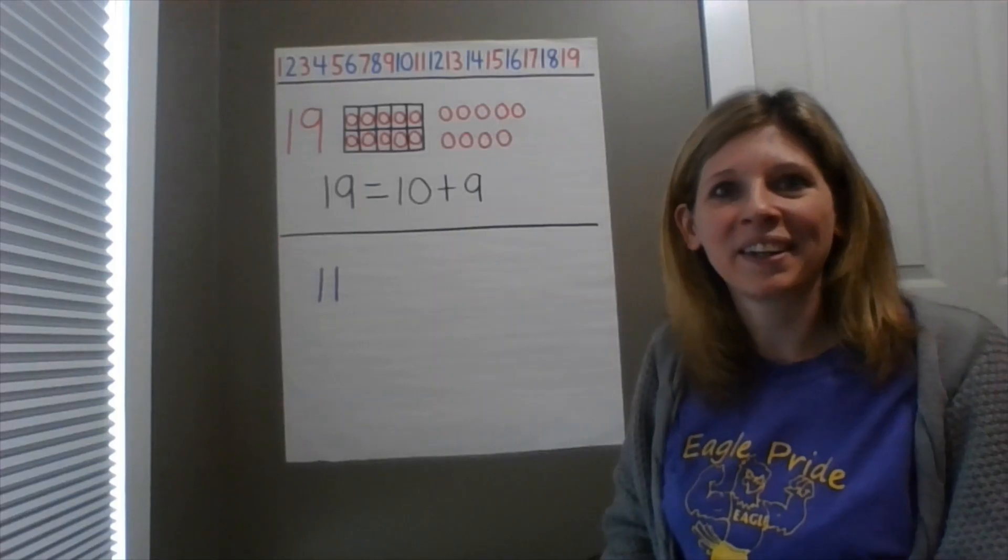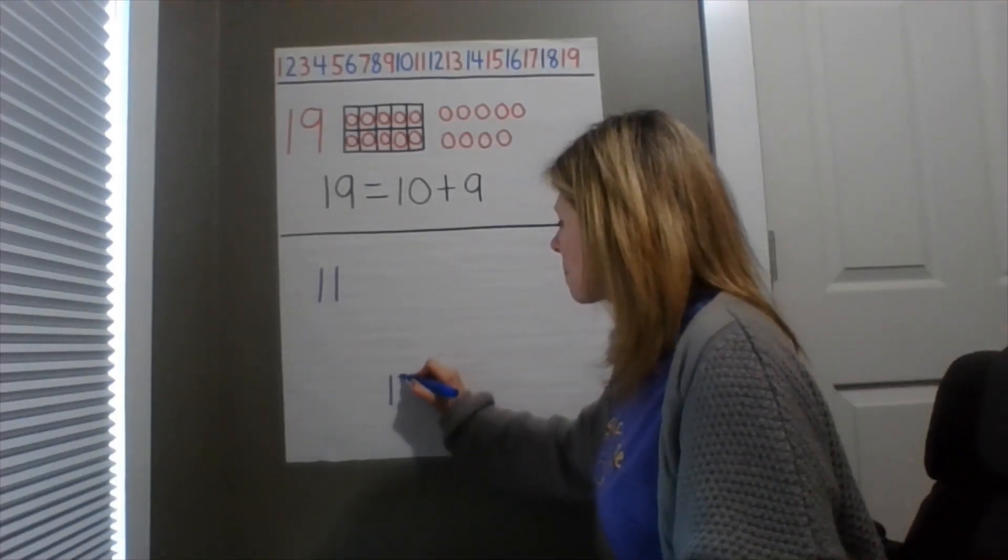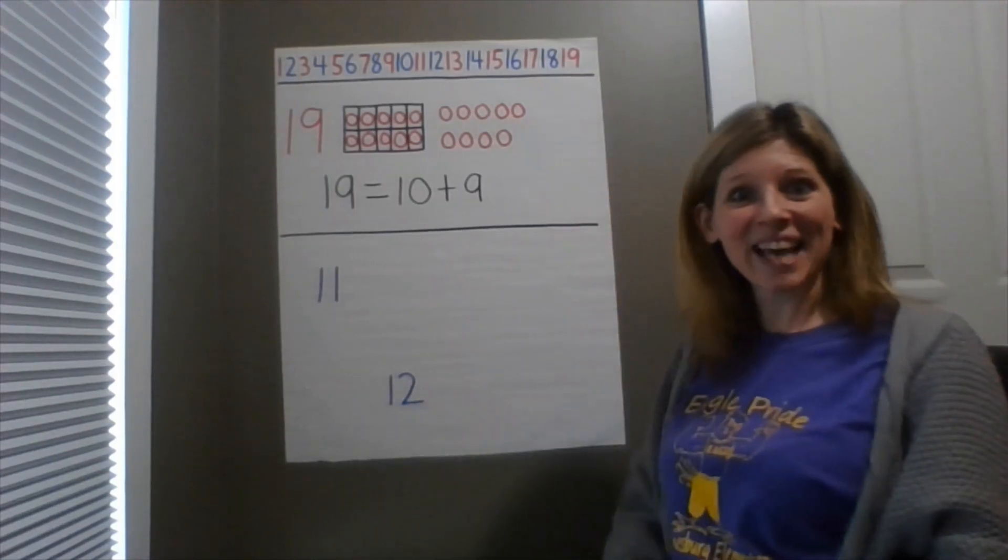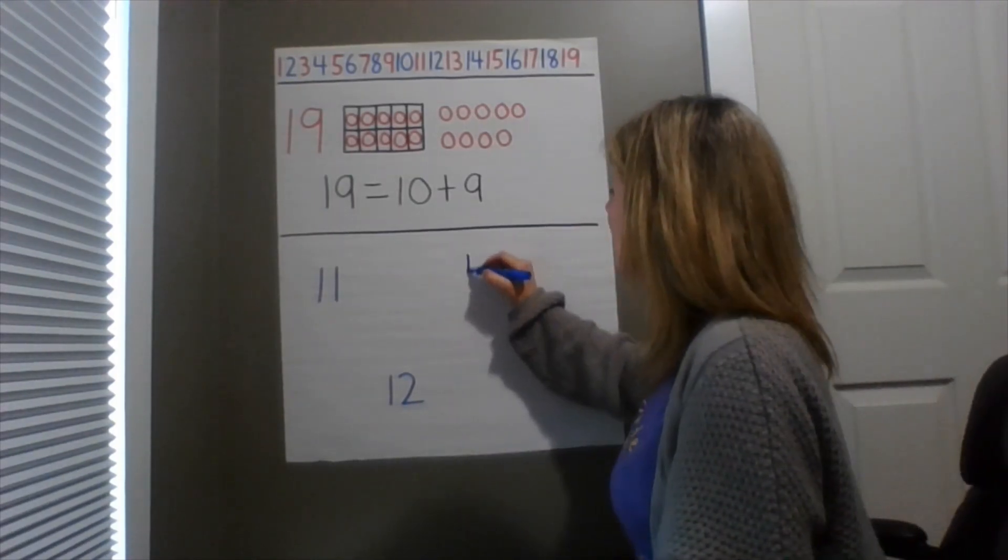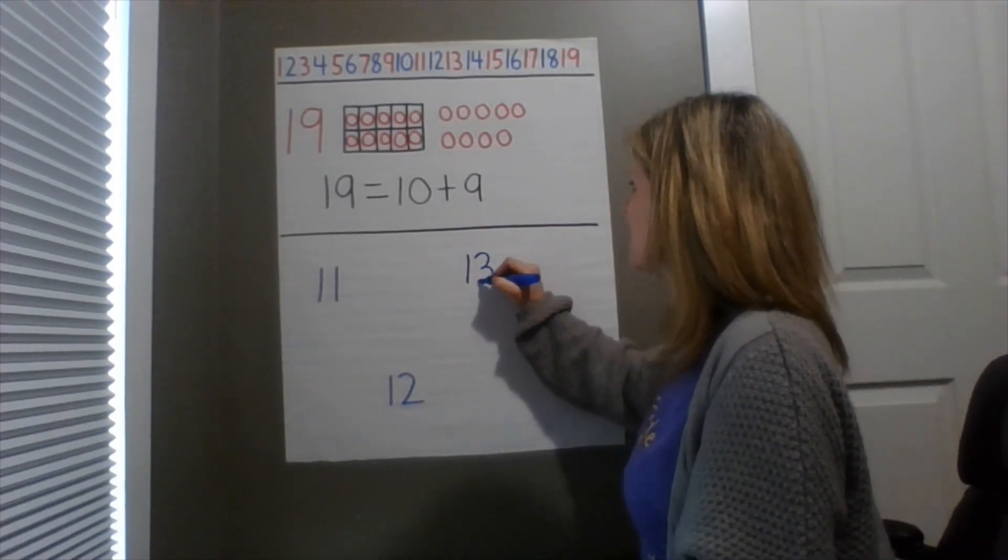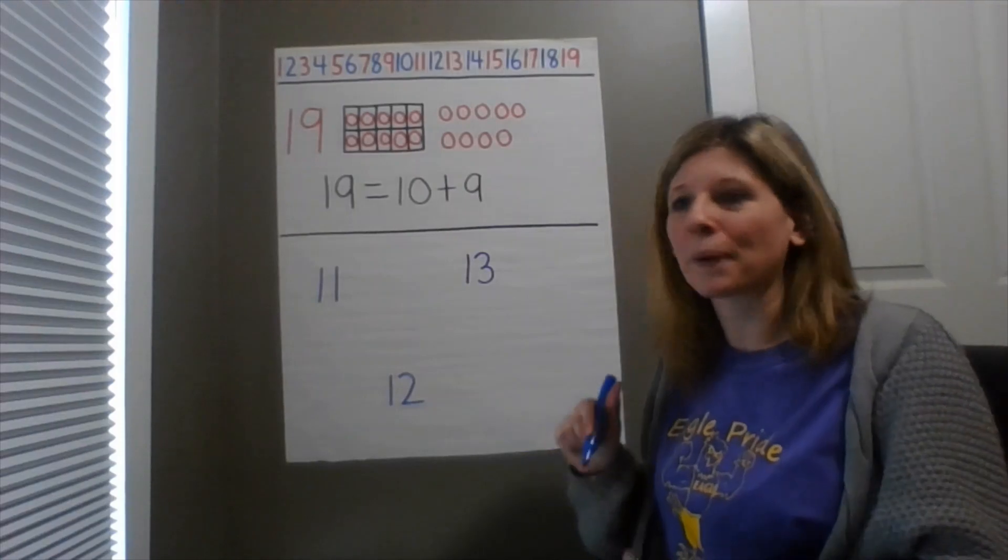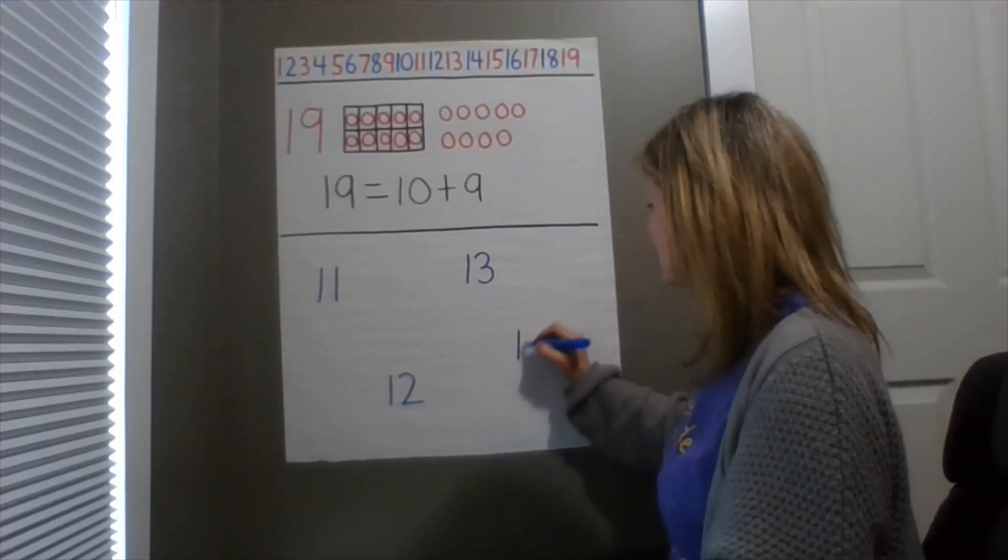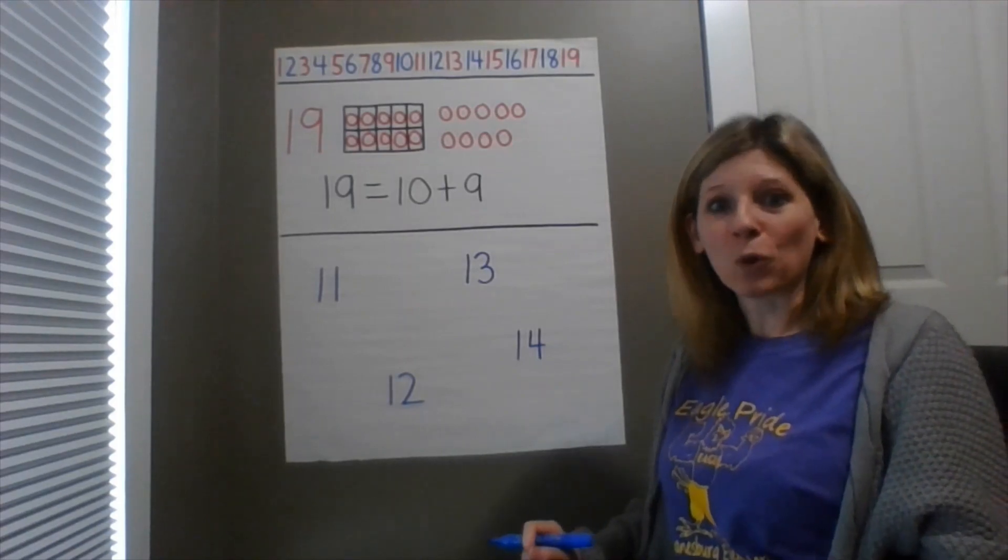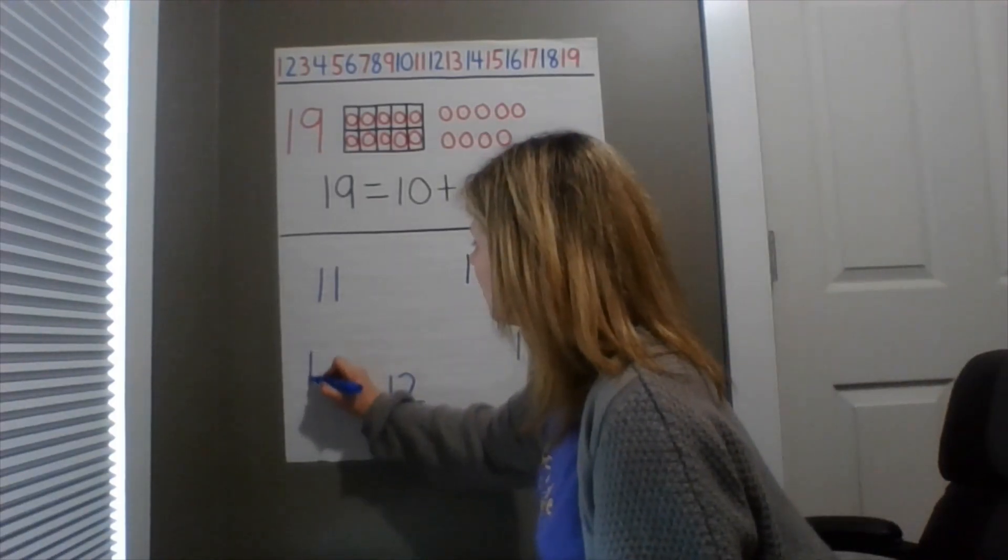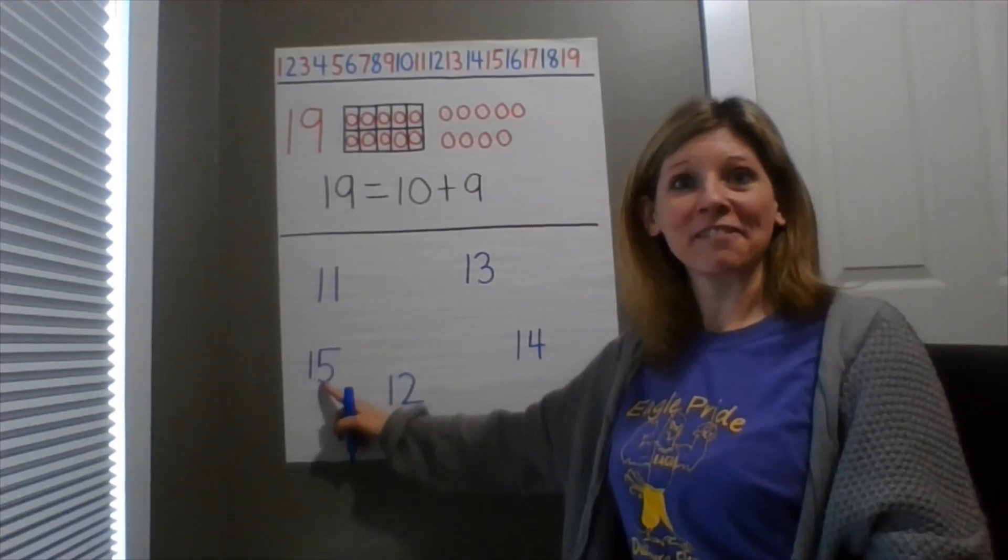What's that number? 11. Good. Okay. What's that one? 12. Excellent. Okay. What is that number? 13. Perfect. And here we have 14. Over here is 15.